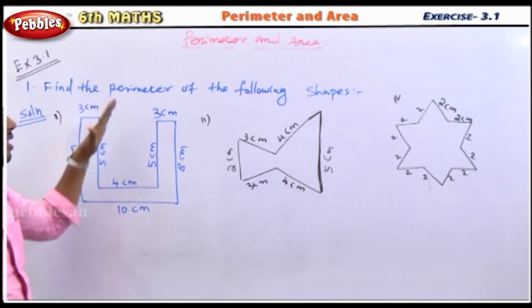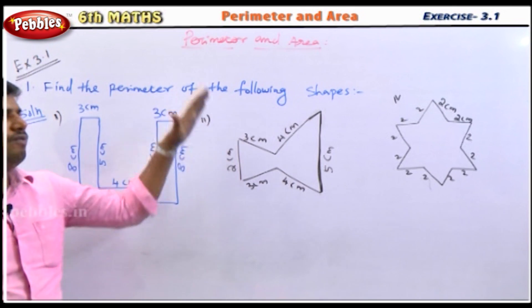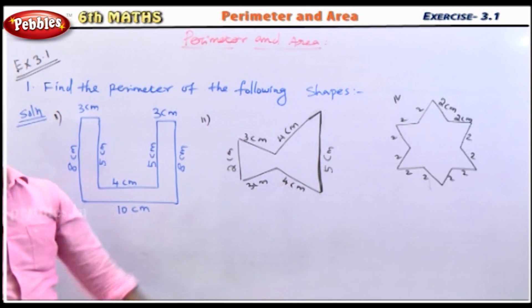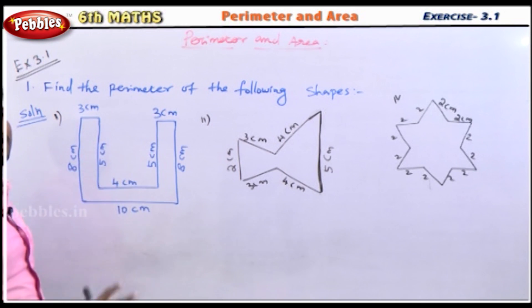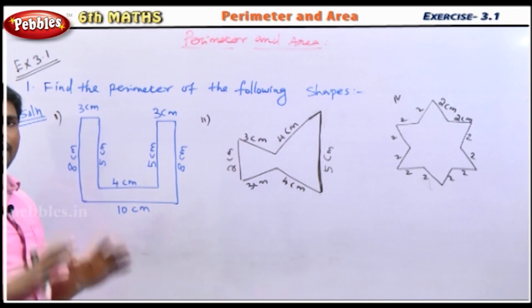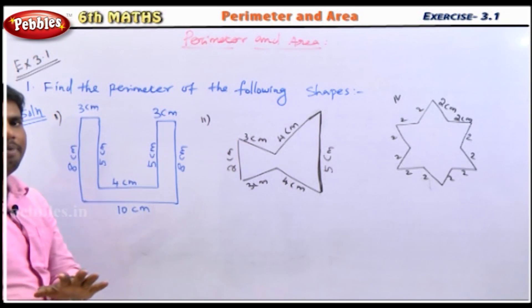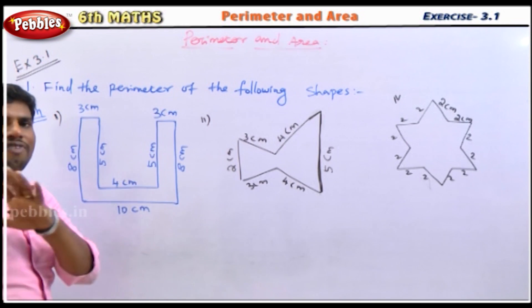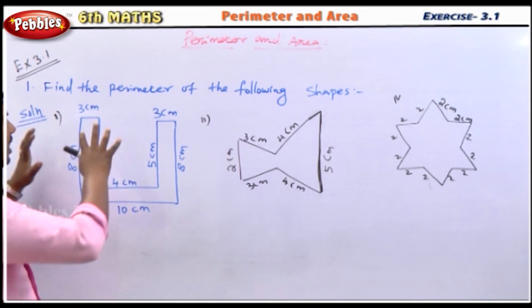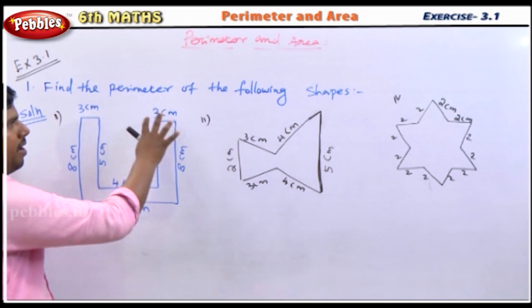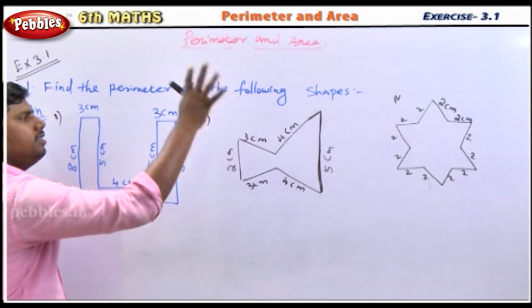First, find the perimeter of the following shapes. You can see and identify the following shapes and their perimeters.